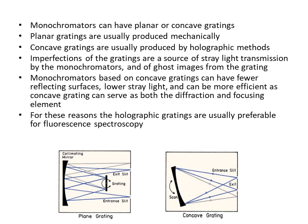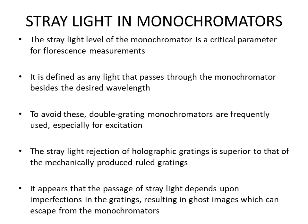Monochromators based on concave gratings have fewer reflecting surfaces, so there are lower chances of stray light and they can be more efficient. A concave grating serves as both a diffraction and focusing element. For these reasons, holographic gratings are usually preferable for fluorescence spectroscopy.